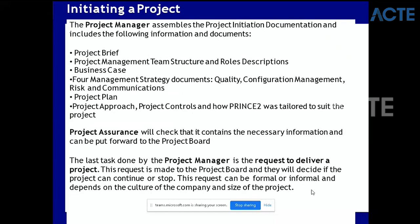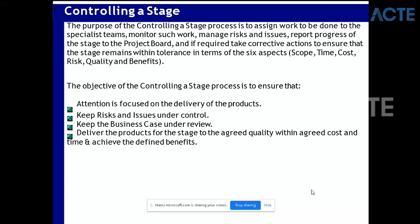Now let's go to the next process, Controlling a Stage. Controlling a Stage is to make sure that whatever you've agreed is delivered. The purpose of the Controlling a Stage process is to assign work to be done to the specialist team, monitor such work, manage risk and issues, report progress of the stage to the project board if required, and take corrective action to ensure that the stage remains within tolerance in terms of the six aspects: scope, time, cost, risk, quality, and benefit.